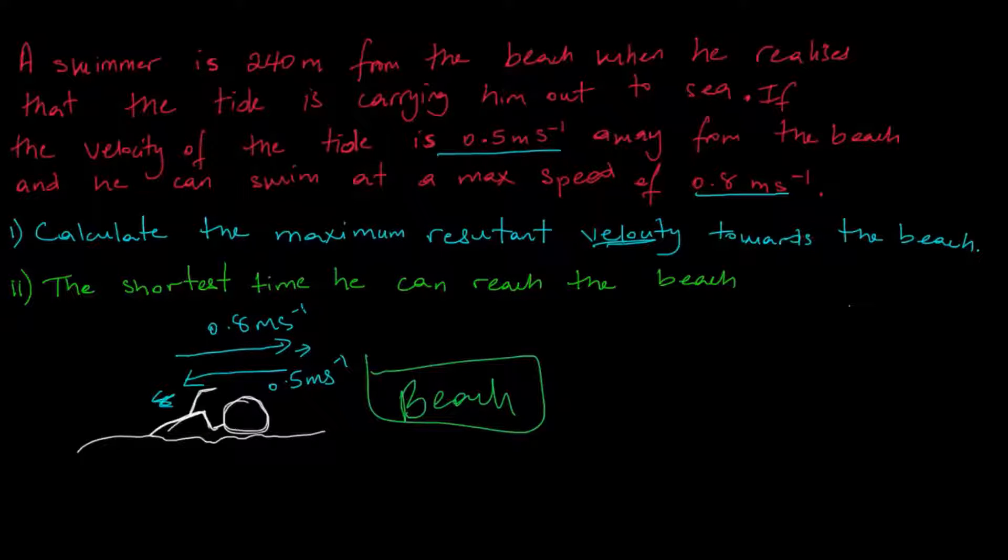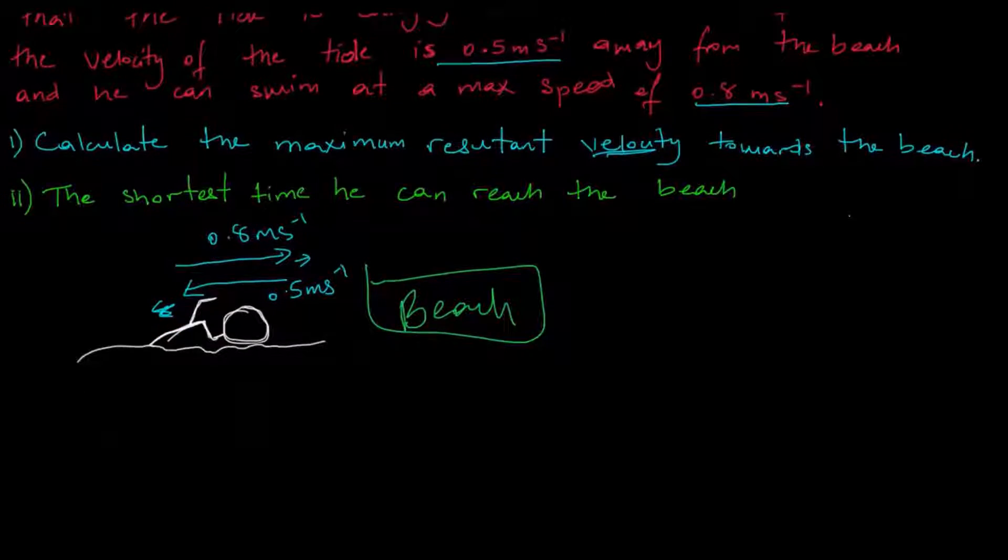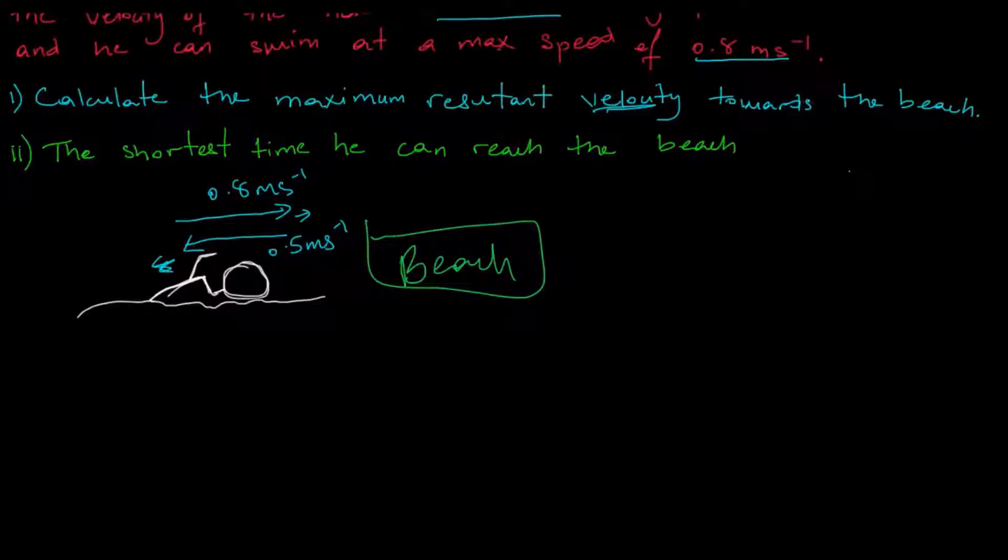So to find our resultant vector, all we need to do is just take the difference of these two vectors. So we can say 0.8 meters per second minus 0.5 meters per second, which gives us a value of 0.3 meters per second. So this is what the resultant vector would be.